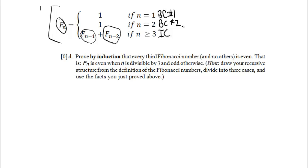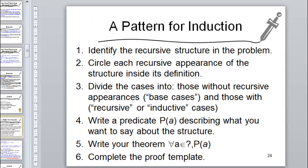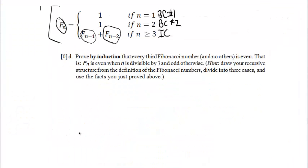Just as a predicate logic theorem gives us a structure for direct proofs, this recursive structure gives us a structure for our induction proof. We need a predicate describing what we want to say about the structure — and that's given to us: F of n is even when n is divisible by 3 and odd otherwise.